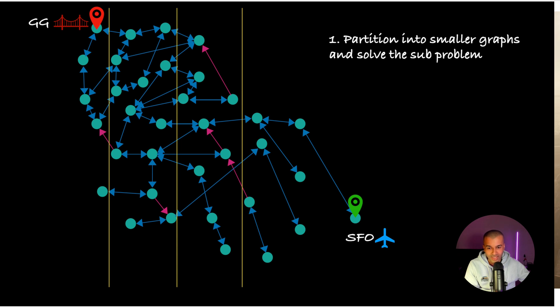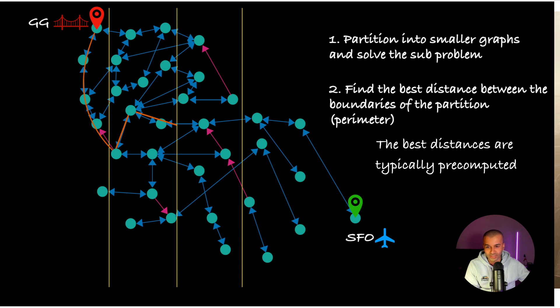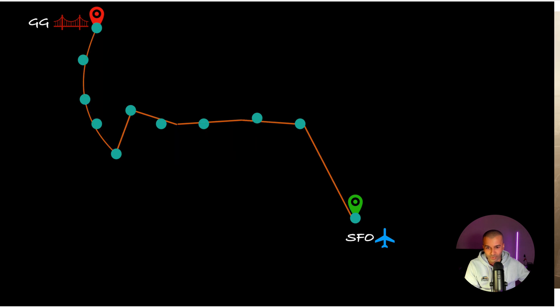By doing this, they're able to find the best distance between the boundaries of the partitions. So they're only dealing with the nodes closer to the perimeters of these partitions. Once they do that, they can construct the shortest best possible distance to go from point A to point B.